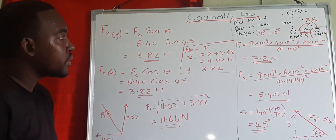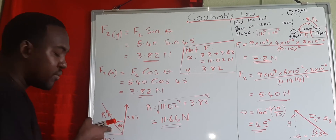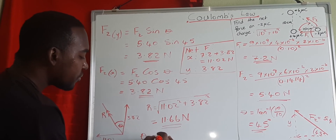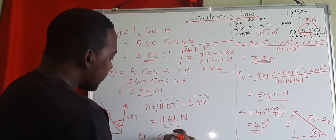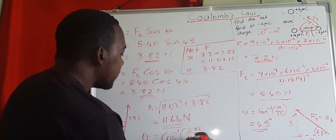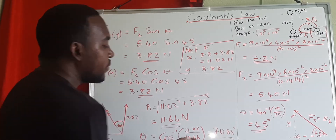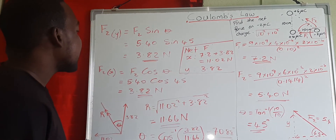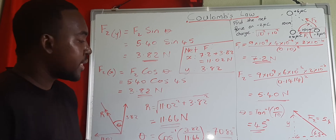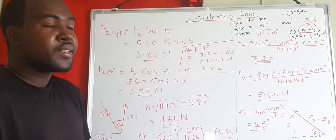So the net force acting on the negative 2 microcoulombs is 11.66 newtons. Finally, we find the angle using cosine: theta = cos inverse of the adjacent side 3.82 divided by the hypotenuse 11.66, which equals 70.88 degrees. The final answer is that the net force acting on the negative 2 microcoulombs is 11.66 newtons acting at 70.88 degrees from the vertical.